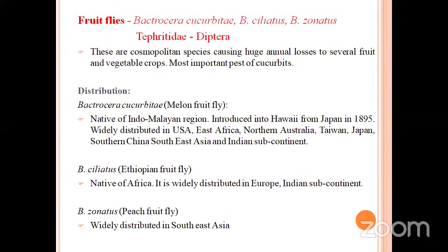Coming to the major pest, fruit fly — Bactrocera cucurbitae. Under fruit fly, three species are present. One is Bactrocera cucurbitae, which is of big size. Bactrocera celiatus is cosmopolitan, and Bactrocera zonatus is of medium size. It belongs to the family Tephritidae and order Diptera. These fruit flies cause huge annual losses in cucurbit crops and it is the most important pest of cucurbits.